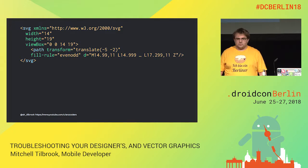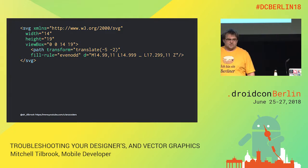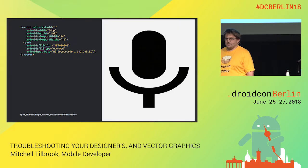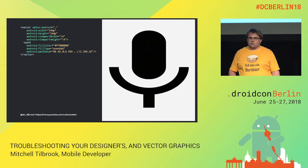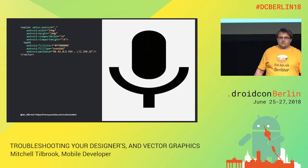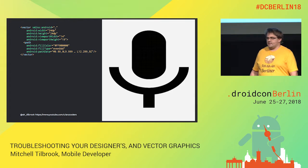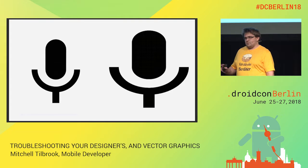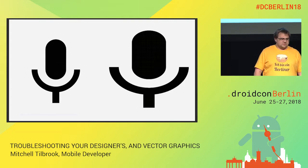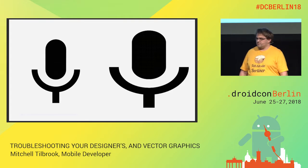So what does this get us? If we actually import this into Android Studio, we get this icon here. It doesn't quite look like what we had, so if we compare it to what we had in Sketch, we can see the icon is a little bit wider. So what's going on here? What's happening to our icon?